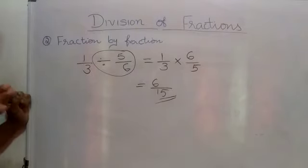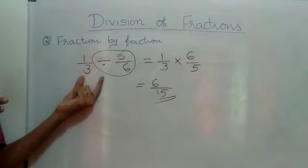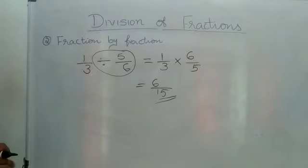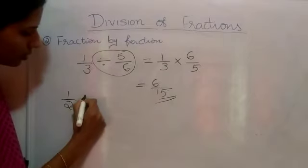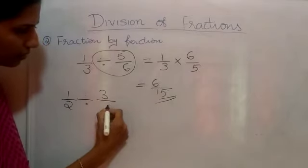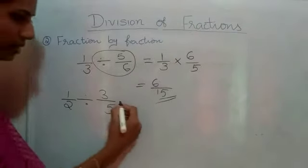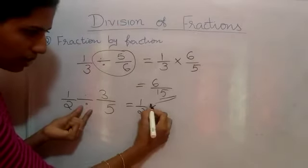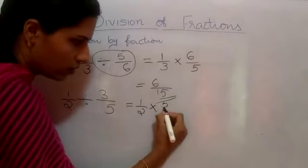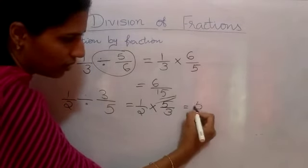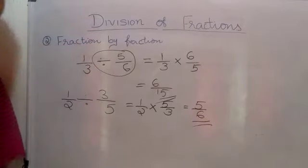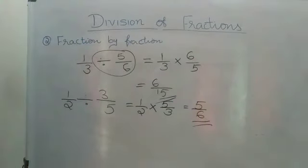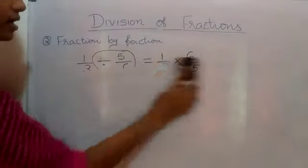So when you are getting two fractions, you multiply the first fraction by the reciprocal of the second fraction. One more example: one-by-two divided by three-by-five. Division turns to multiplication and three-by-five becomes five-by-three. That equals five-by-six. These are the methods of division of a whole number by a fraction, and fraction by a fraction. Hope you understood. We will do some problems.